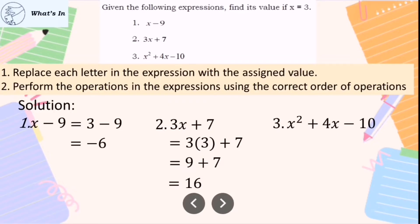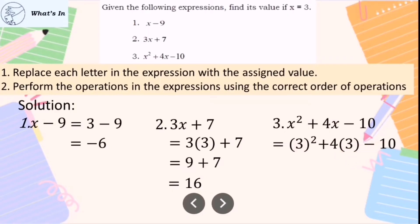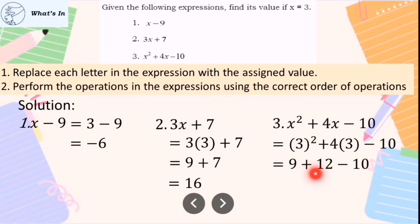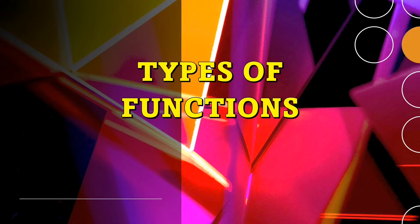For x squared plus 4x minus 10, substituting x equals 3 gives 3 squared plus 4 times 3 minus 10. That is 9 plus 12 minus 10, which equals 11. Always remember to follow PEMDAS rule. Before we proceed to evaluation of functions, let's look at some common types of functions.